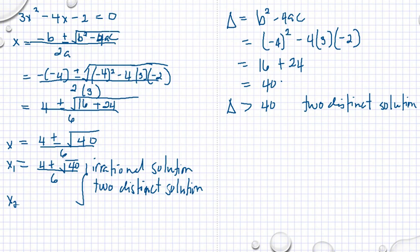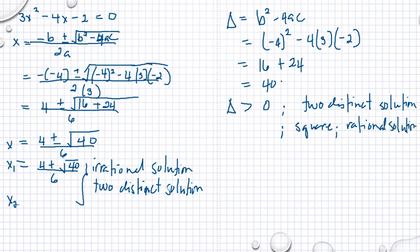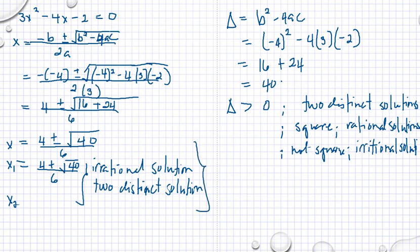When the discriminant is greater than 0, if it is a perfect square then you will get 2 rational solutions. If it is not a perfect square, you will get 2 distinct irrational solutions. In this case, our example here, we got 2 distinct irrational solutions.